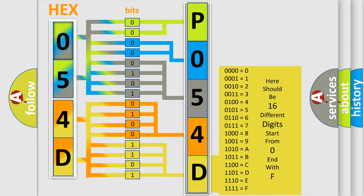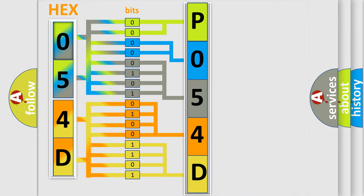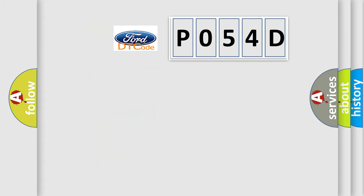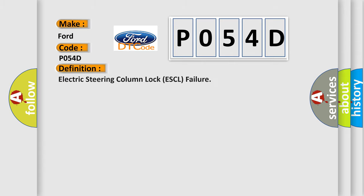We now know in what way the diagnostic tool translates the received information into a more comprehensible format. The number itself does not make sense to us if we cannot assign information about what it actually expresses. So, what does the diagnostic trouble code P054D interpret specifically? The basic definition is: Electric Steering Column Lock (ESCL) failure.